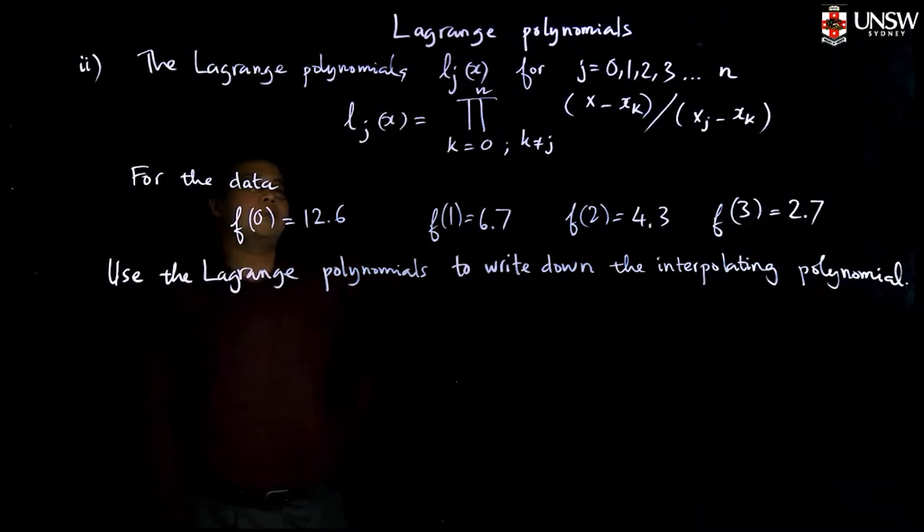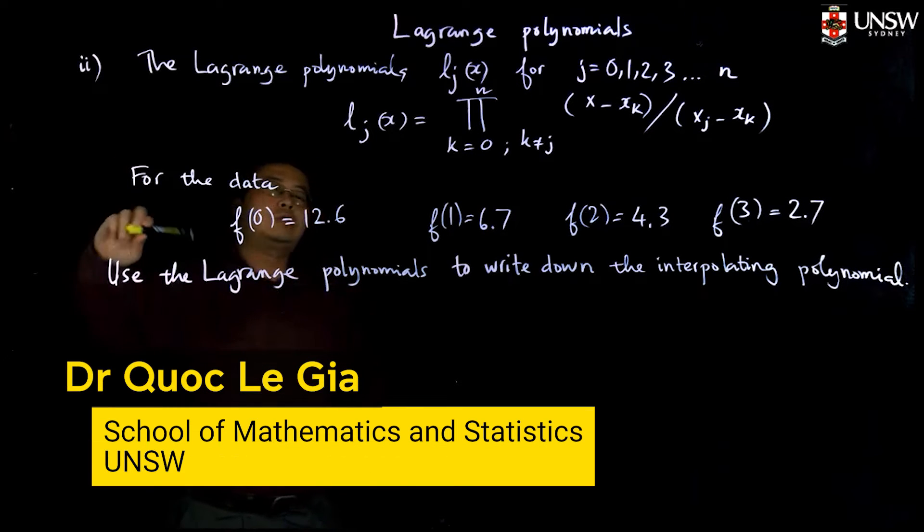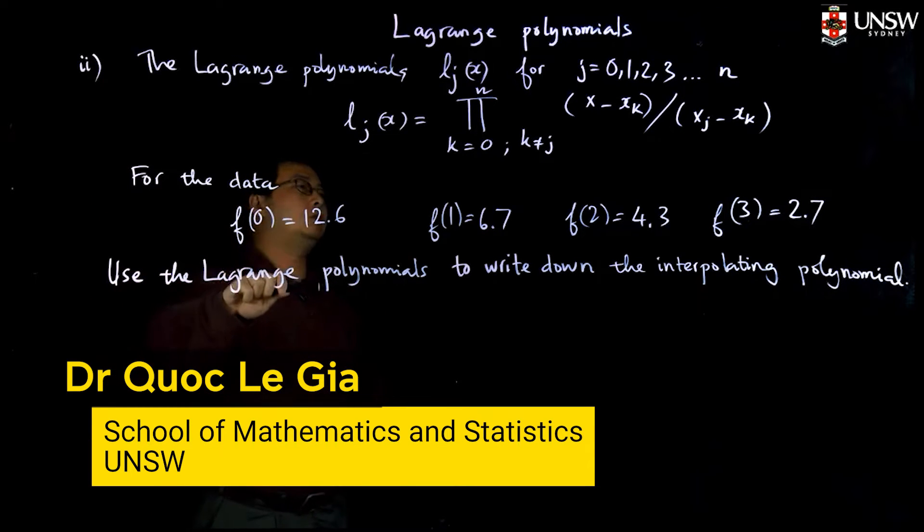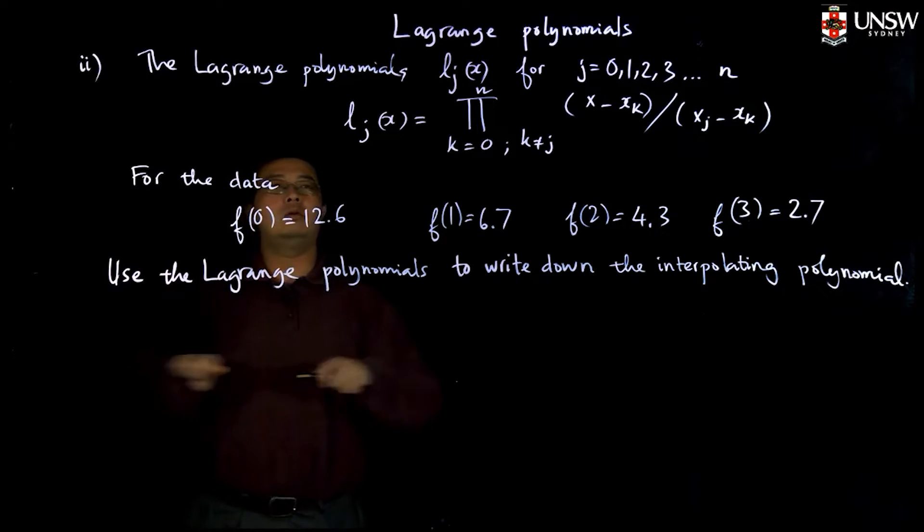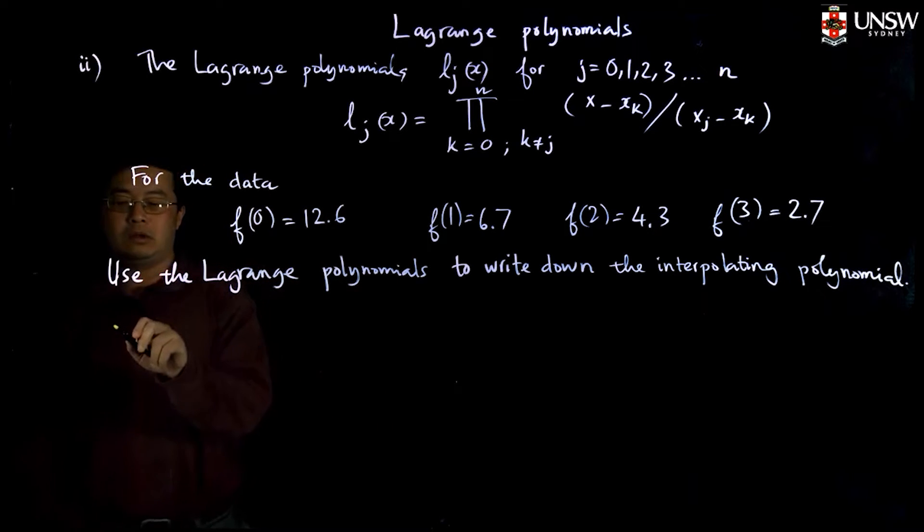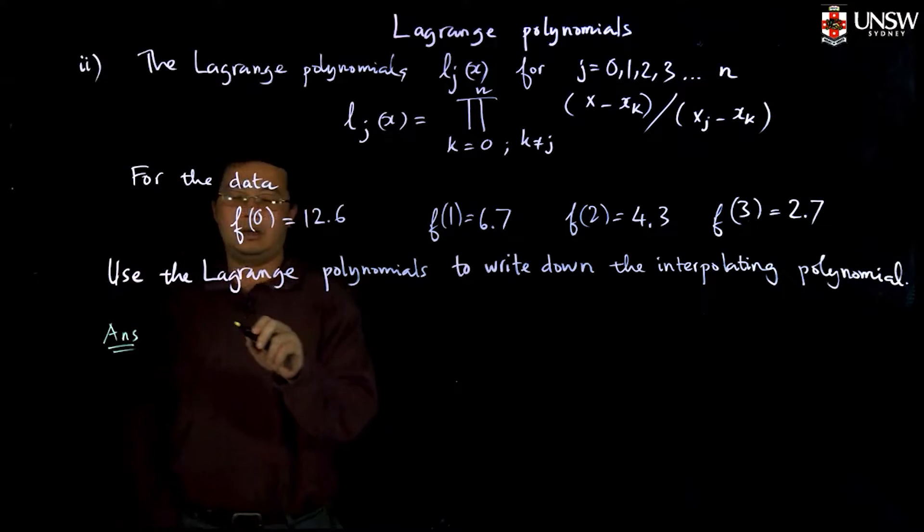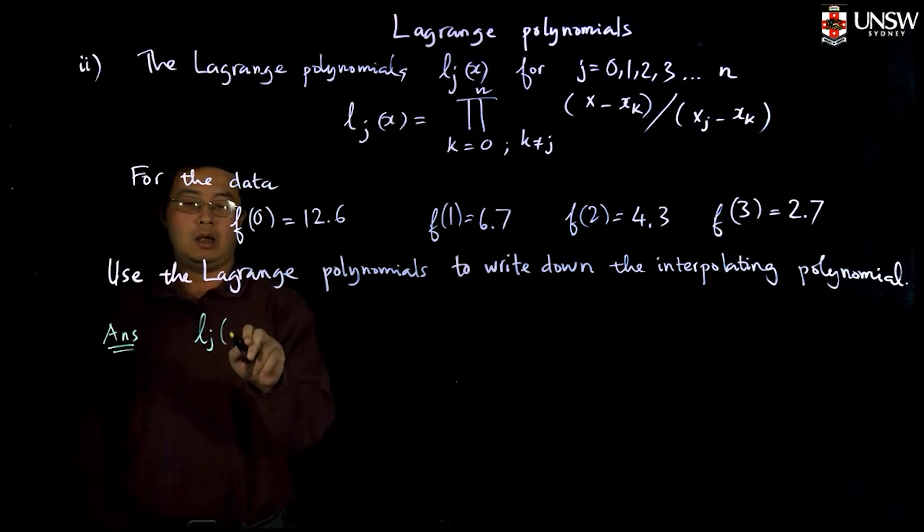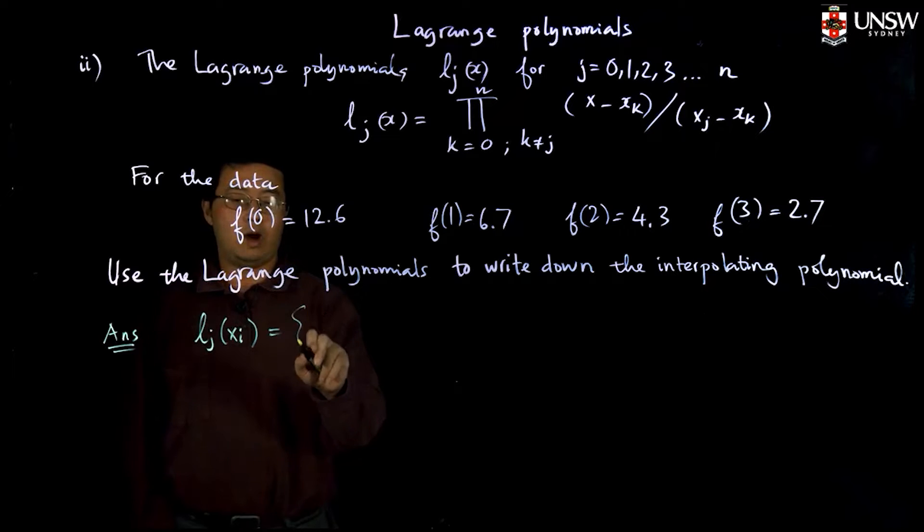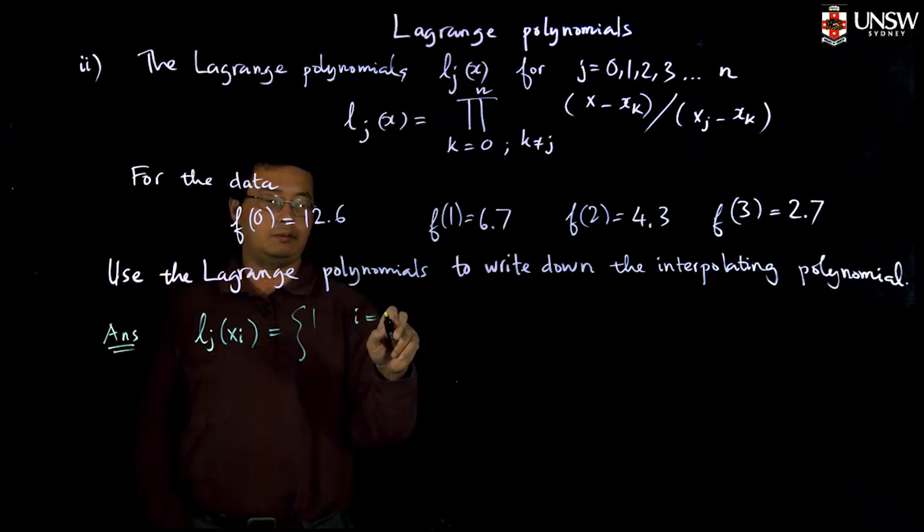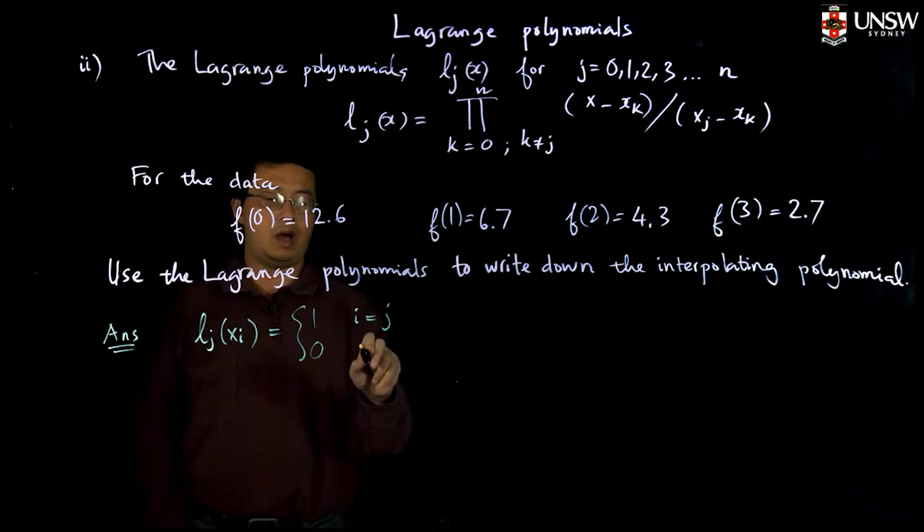Okay, so now the next step is how you use the Lagrange polynomials to write down the interpolation polynomial. Just remember the property that l_j(x_i) is 1 if i equals j and equals 0 if i different from j.